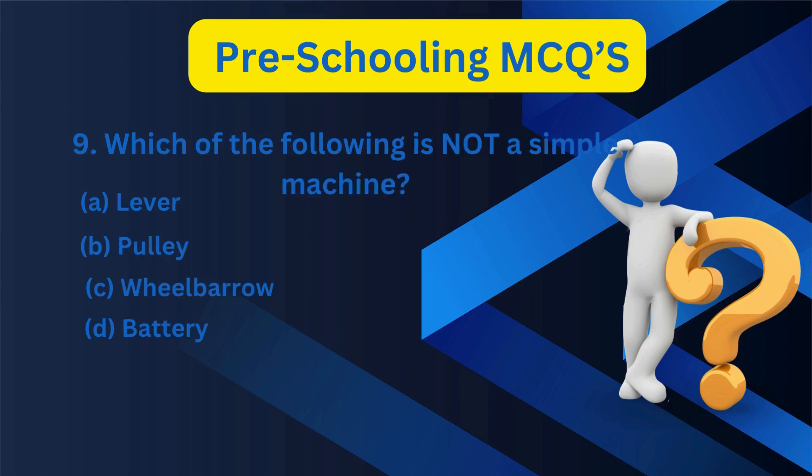9. Which of the following is not a simple machine? A. Lever, B. Pulley, C. Wheelbarrow, D. Battery.